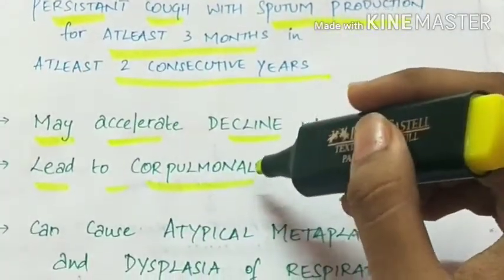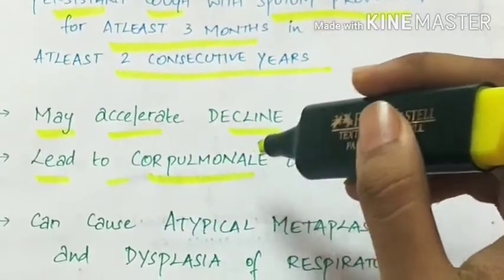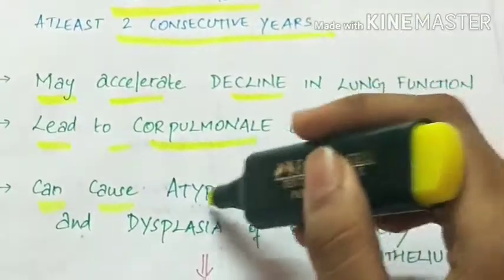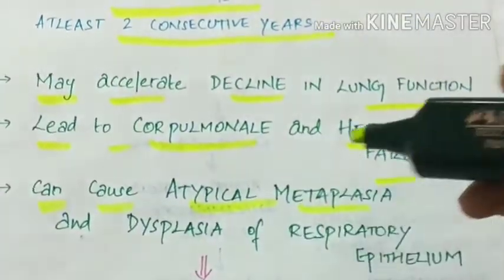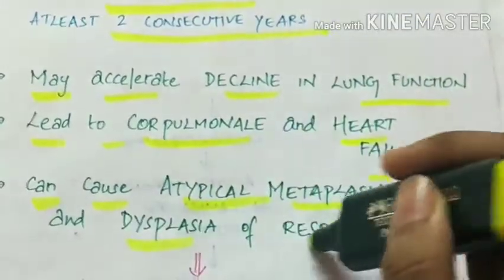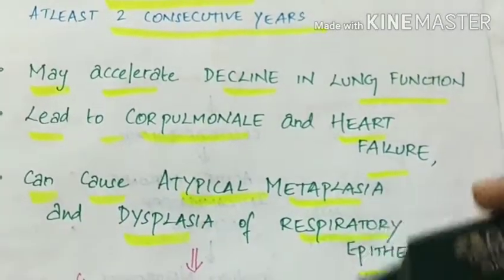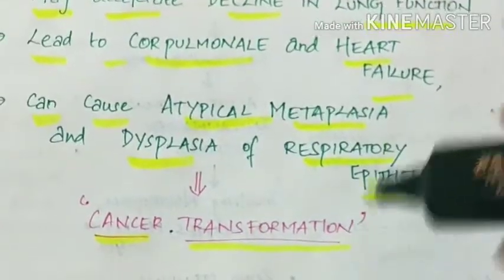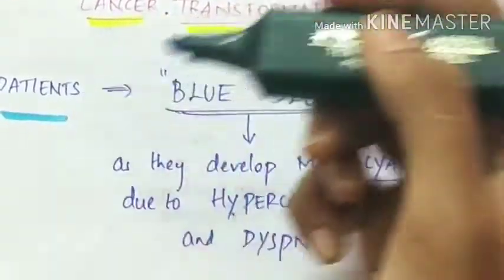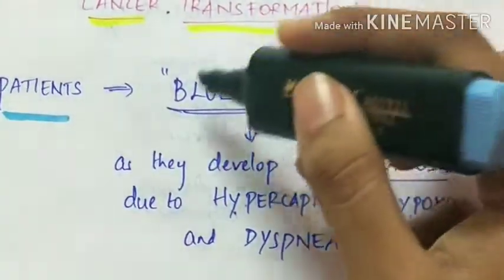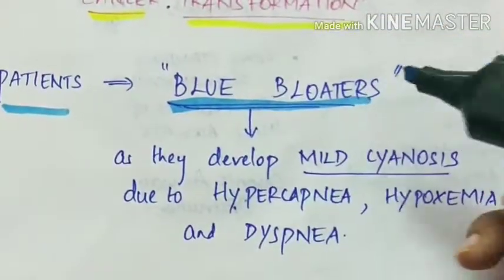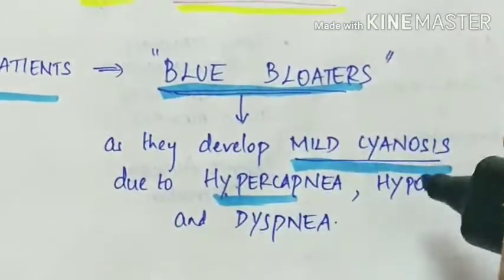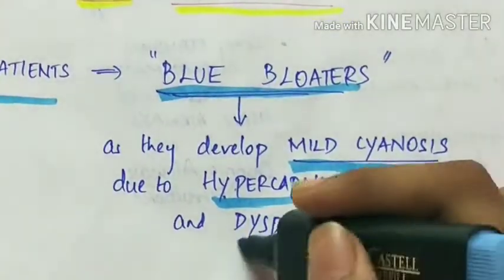Cor pulmonale is right-sided heart failure due to lung disease. It can cause atypical metaplasia and dysplasia of the respiratory epithelium, which can lead to cancerous transformation. The patients with chronic bronchitis are called blue bloaters as they develop mild cyanosis due to hypercapnia, hypoxemia and dyspnea.